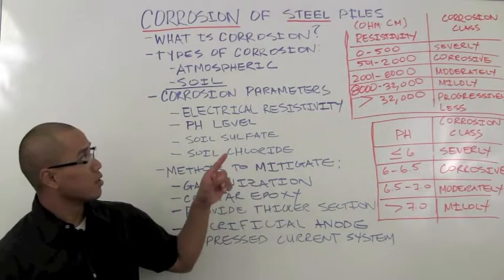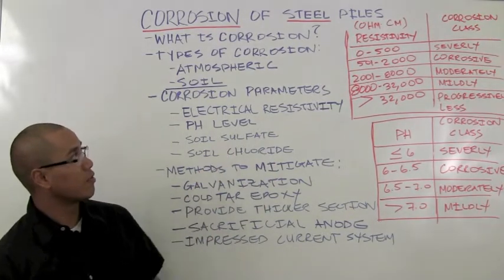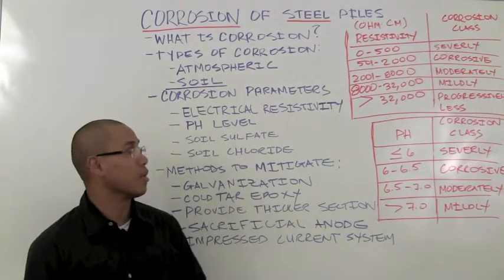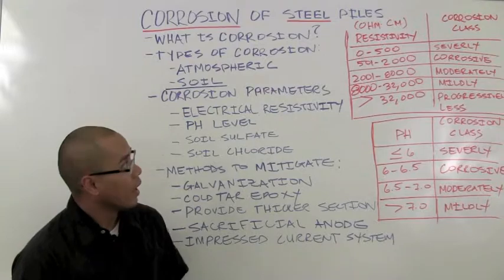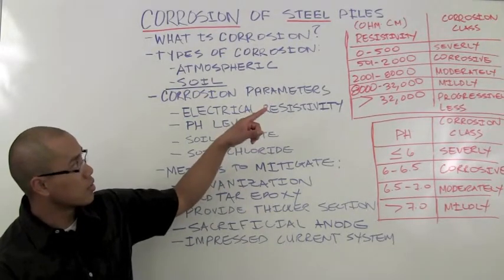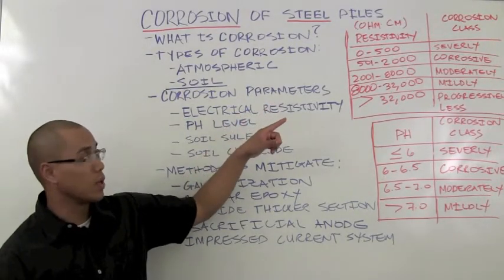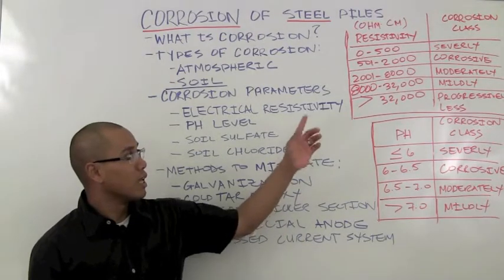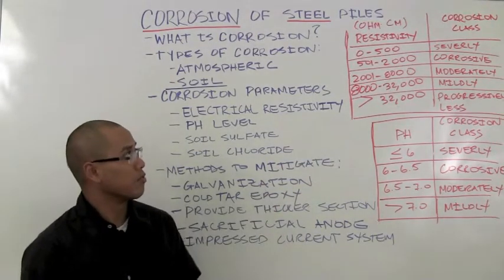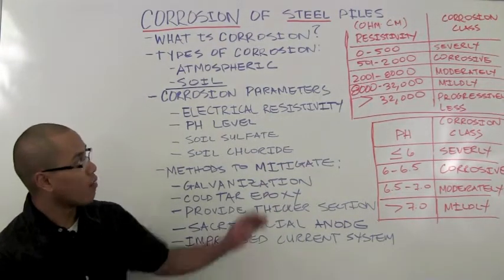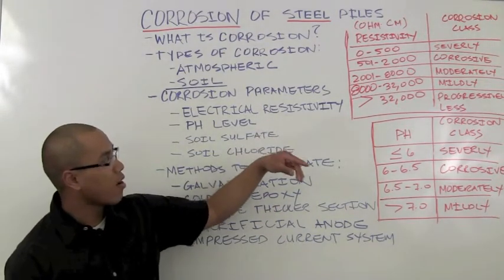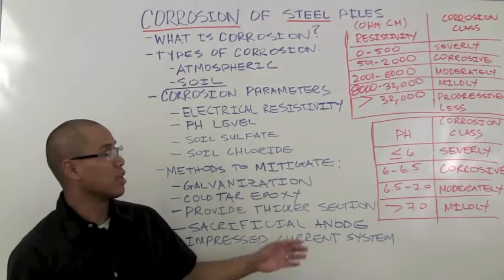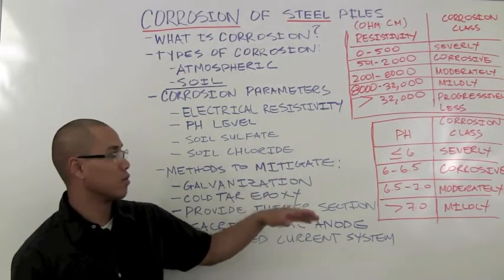As you can see in the table to my left here, resistivity is measured in ohm centimeters. At the top of the table, resistivity values between 0 and 500 would deem the soil to be severely corrosive. However, as you get higher in the resistivity values, the soil tends to be less corrosive.